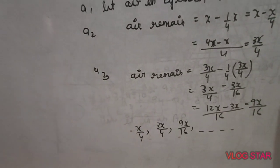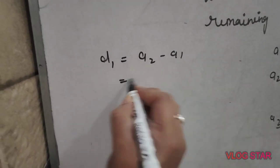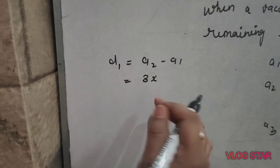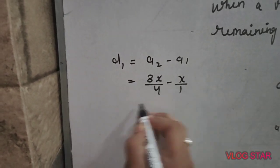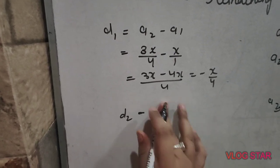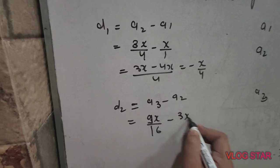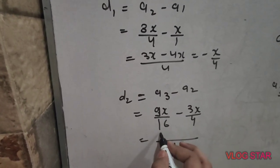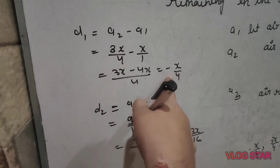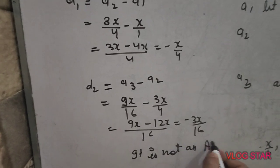Now checking if this is an AP: D1 = A2 − A1 = 3x/4 − x = −x/4. D2 = A3 − A2 = 9x/16 − 3x/4. Taking LCM as 16, this gives −3x/16. Since D1 = −x/4 and D2 = −3x/16 are different, the common difference is not constant. Therefore, it is not an AP.